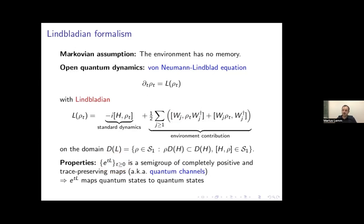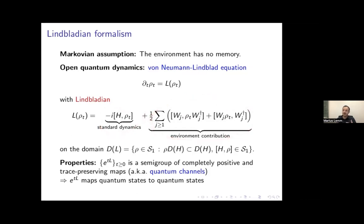This is the kind of dynamics we look at — an extension of Schrödinger dynamics with an additional environment term in the generator. We want to ask: is there some finite speed of propagation? This will require some assumptions on the potential in H and on the Krauss operators W.